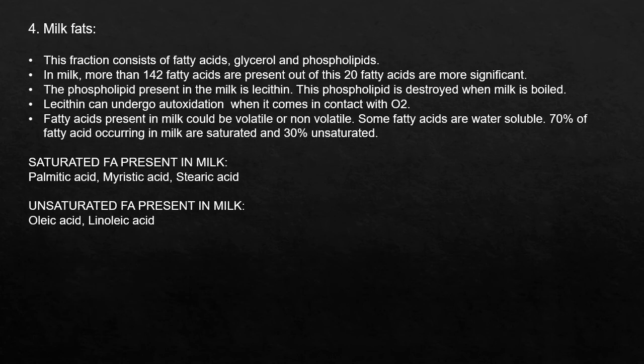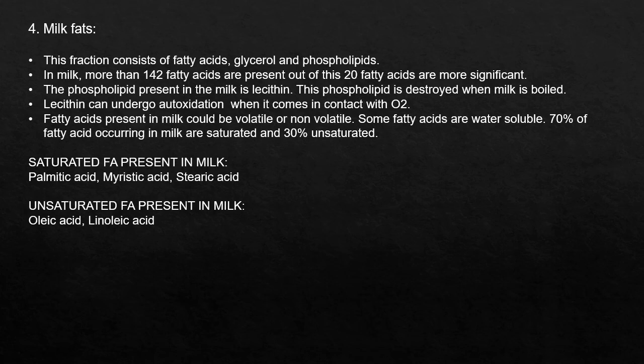Milk fats consist of fatty acids, glycerol, and phospholipids. Around 142 fatty acids are present in milk, of which 20 are more significant. The phospholipid present in milk is lecithin, which is destroyed when milk is boiled and can undergo auto-oxidation upon contact with oxygen. Fatty acids can be volatile or non-volatile, and some are water soluble. About 70% of fatty acids in milk are saturated — such as palmitic, myristic, and stearic acid — and 30% are unsaturated, such as linoleic and oleic acid.